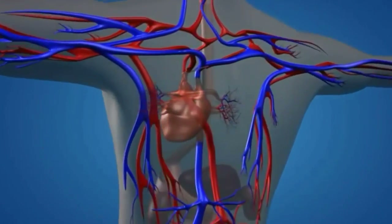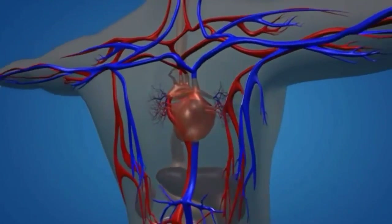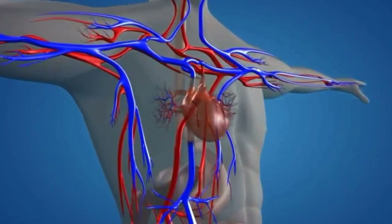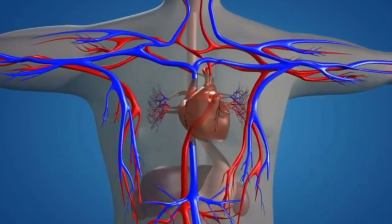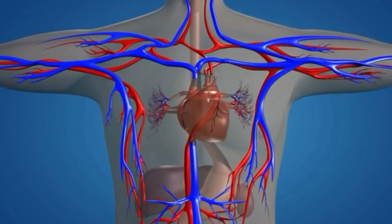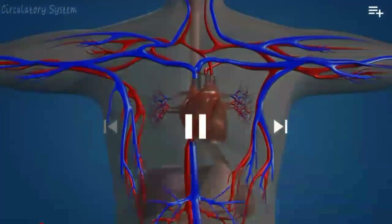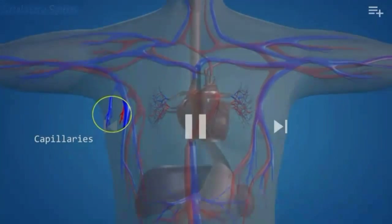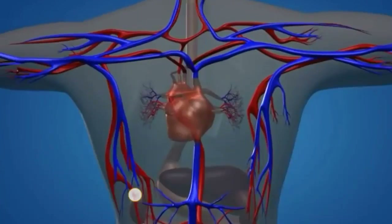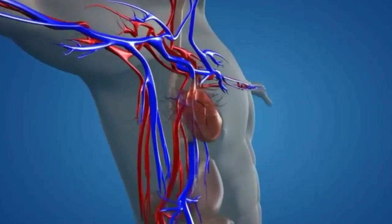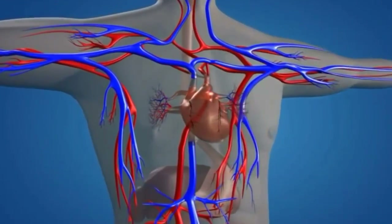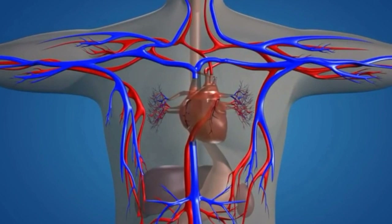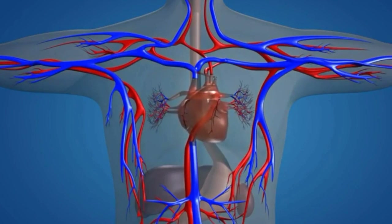To pump blood efficiently, the heart requires blood vessels. Blood vessels throughout the body are classified into three types: the blue-colored vessels are veins, the red-colored vessels are arteries, and the smaller branches are capillaries. Capillaries of veins are called venules, and capillaries of arteries are called arterioles — the thinnest blood vessels in the body.